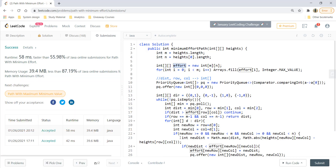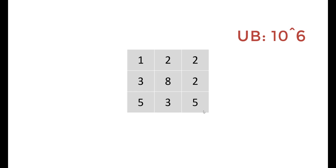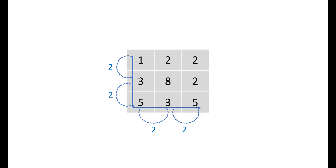Now let's apply binary search. The effort has a lower bound of 0 and an upper bound of 10^6. We binary search on a threshold k: check if there exists a path from (0,0) to the last cell using only edges with cost ≤ k. If such a path exists we shrink the window to the left; if not, we move right. For example, with threshold 2 a path exists, but with threshold 1 it doesn't, so the answer is 2.